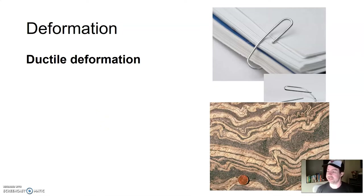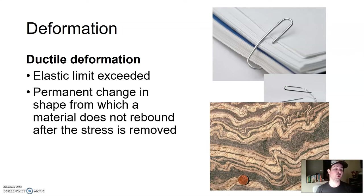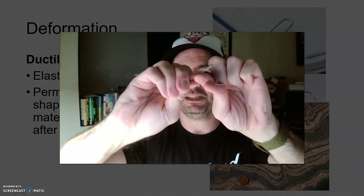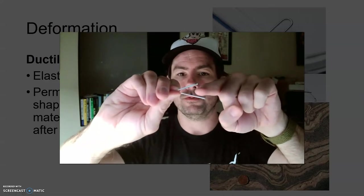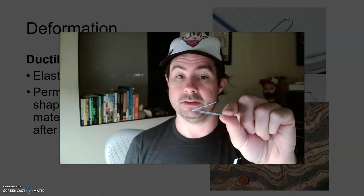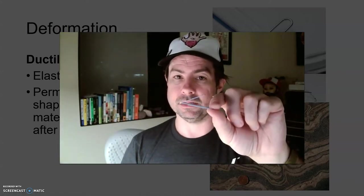If you continue to apply stress, you might exceed the elastic limit — meaning there's a permanent change in shape from which the material does not rebound after the stress is removed. With the paper clip, if I apply a little stress and release it, it snaps back. But if I apply too much stress and then remove it, I've exceeded the elastic limit and it's now in ductile deformation — the stress is removed, but it hasn't bounced back. Nothing's broken yet, but there's been a permanent change in shape.